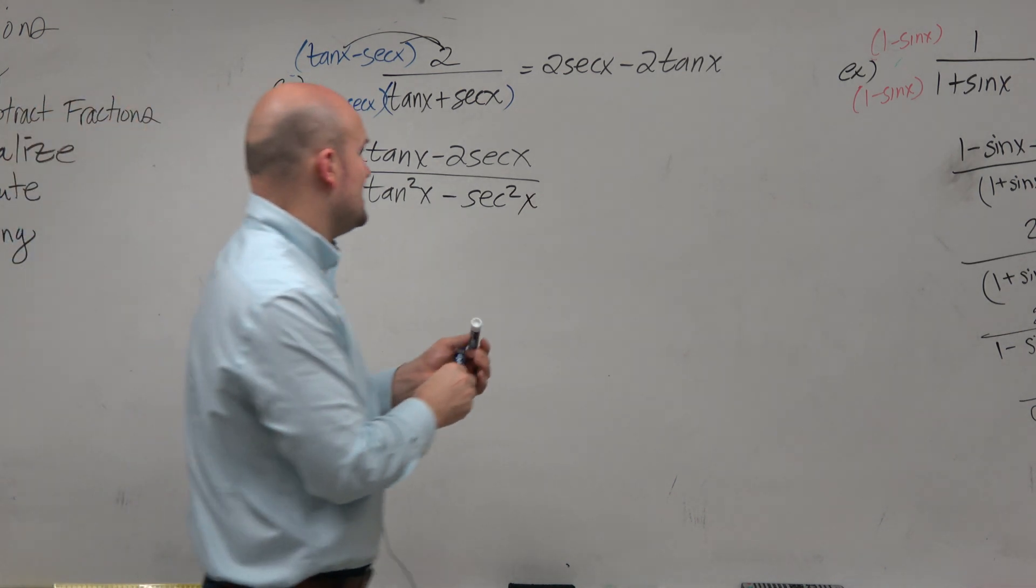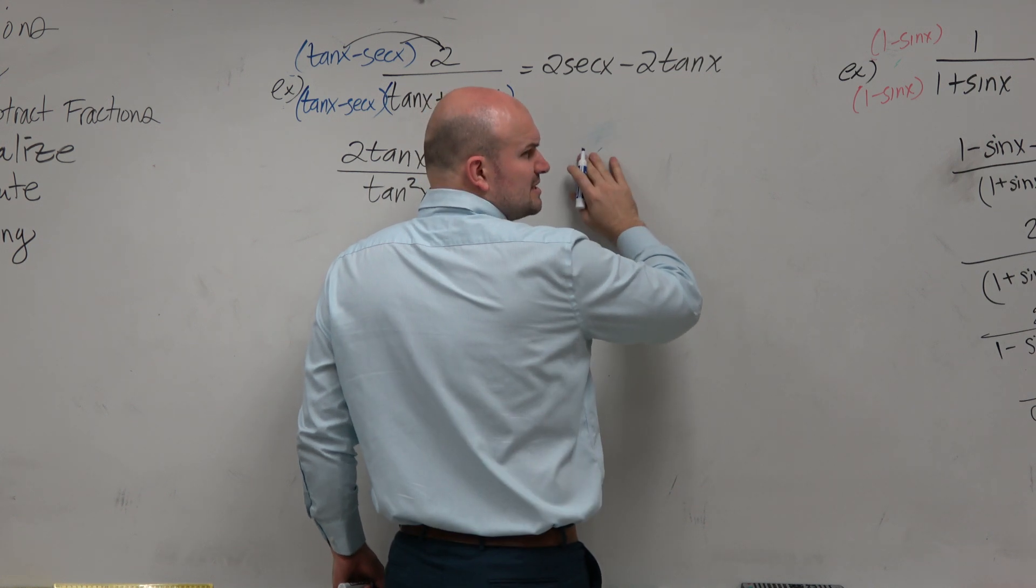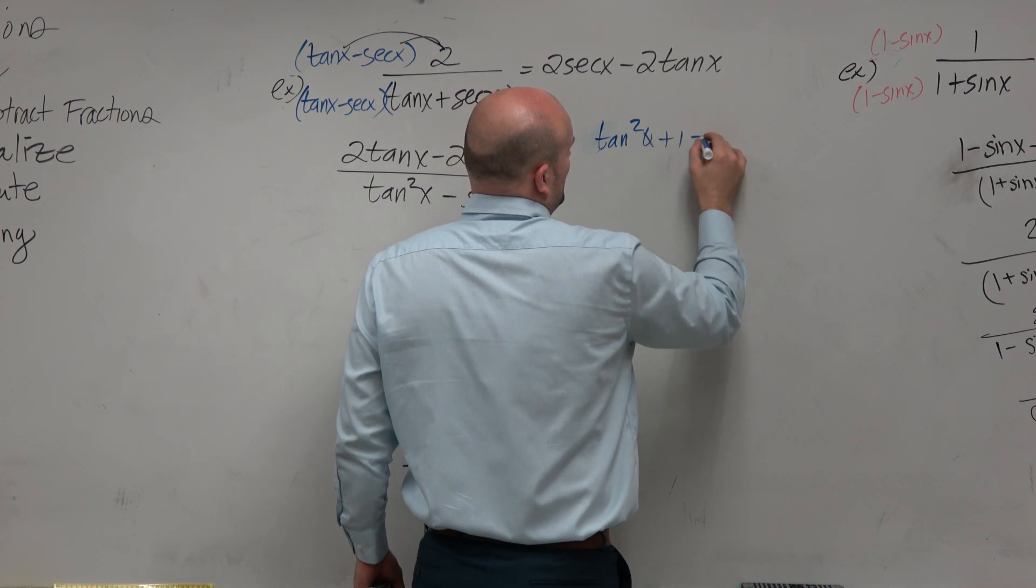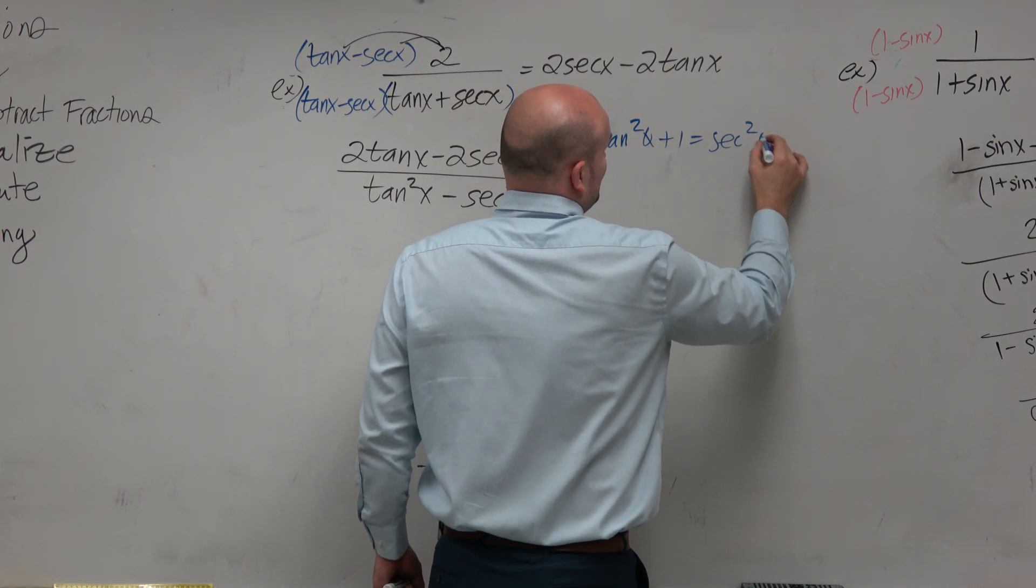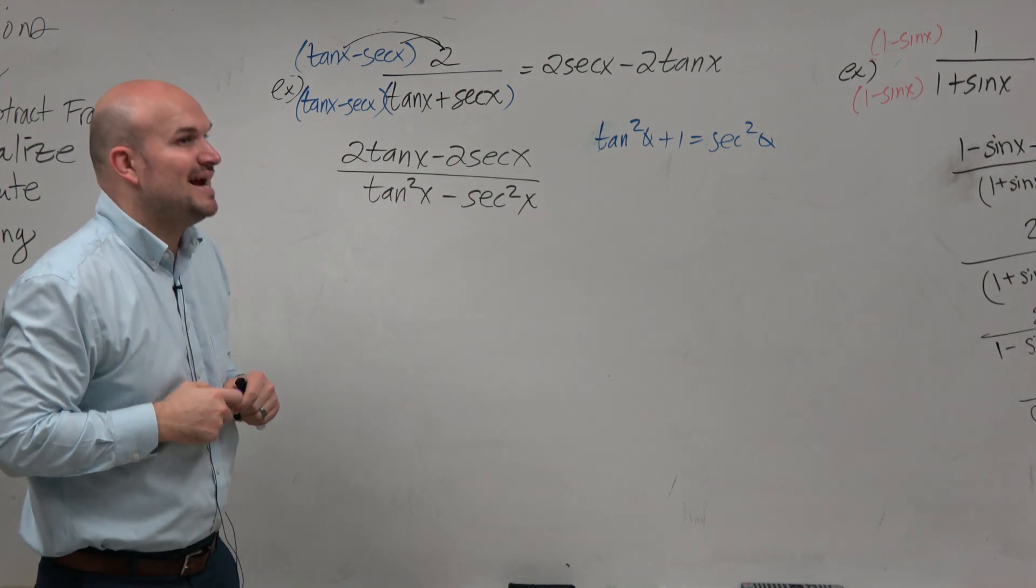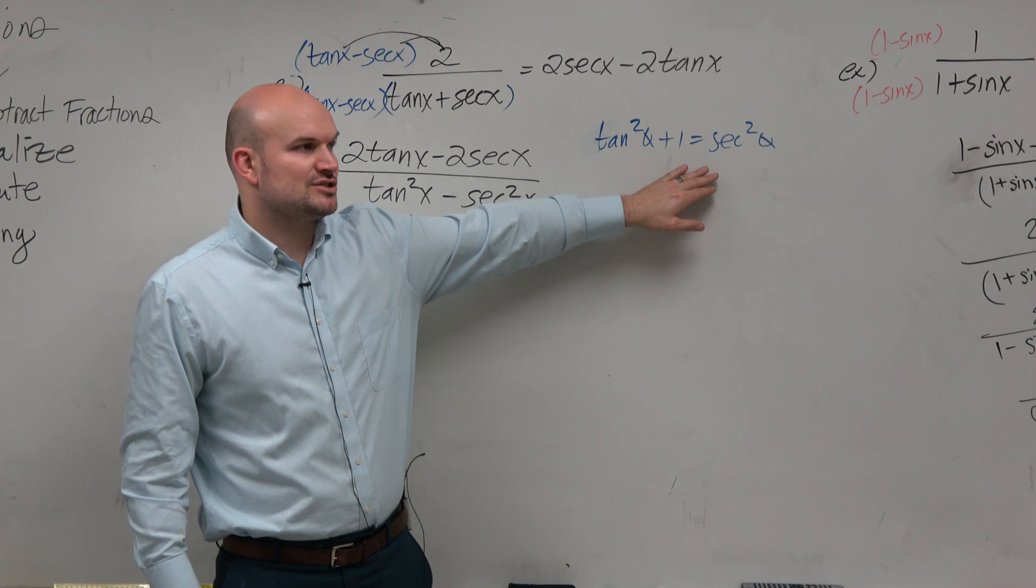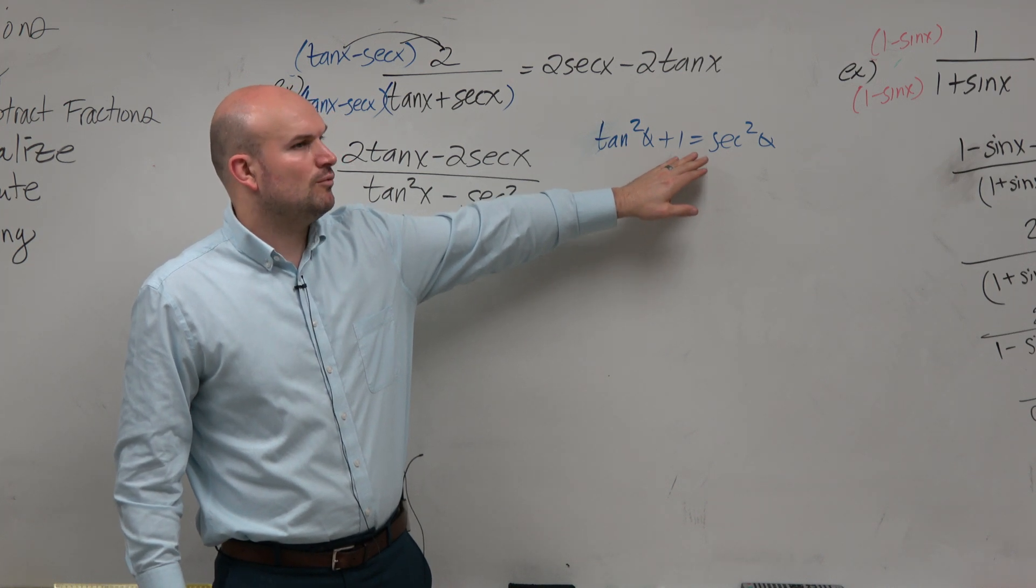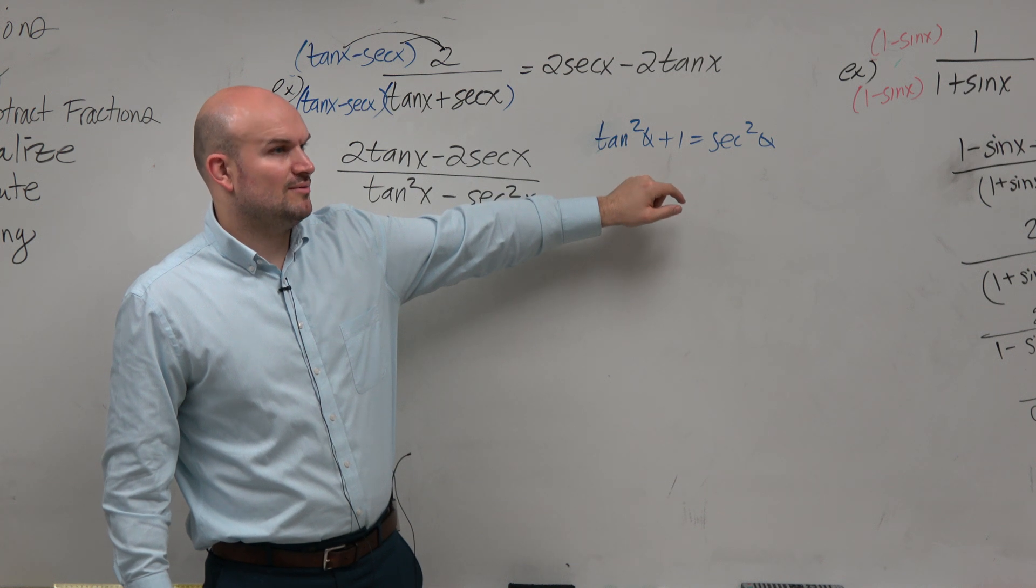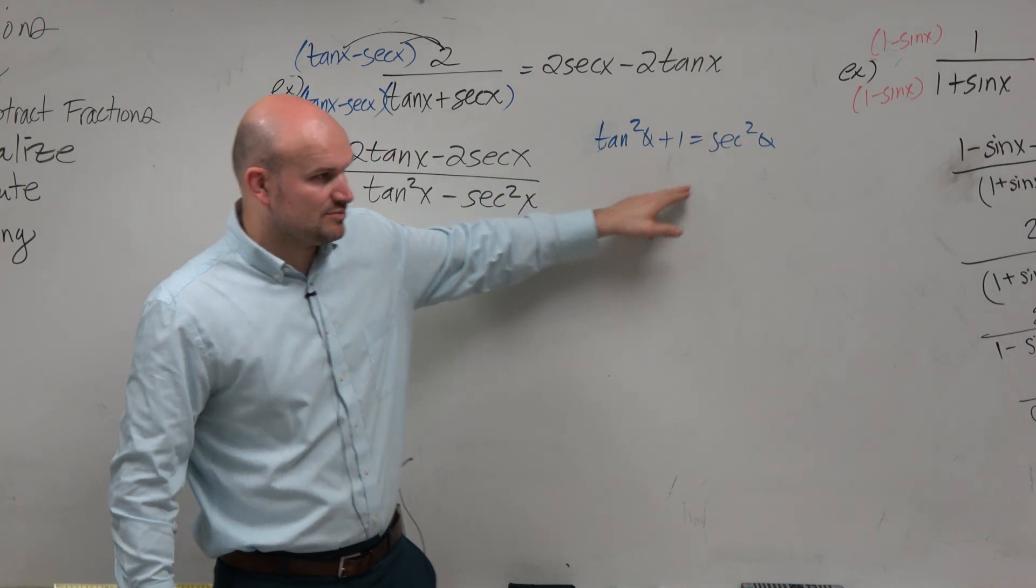Now, on a side note, we know that tangent squared of x minus secant squared of x - so what if I wrote this equation as tangent squared of theta minus secant squared of theta? What would that equal? Close. Not 1. Negative 1, right? Because you subtract the secant and subtract the 1.